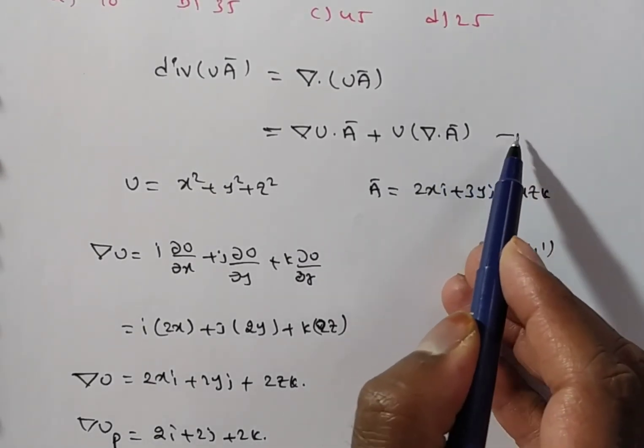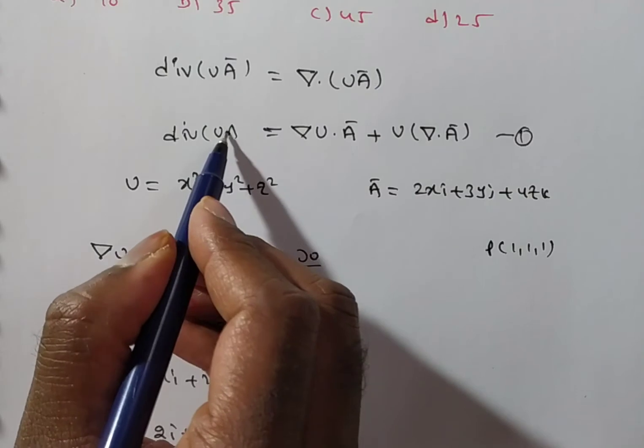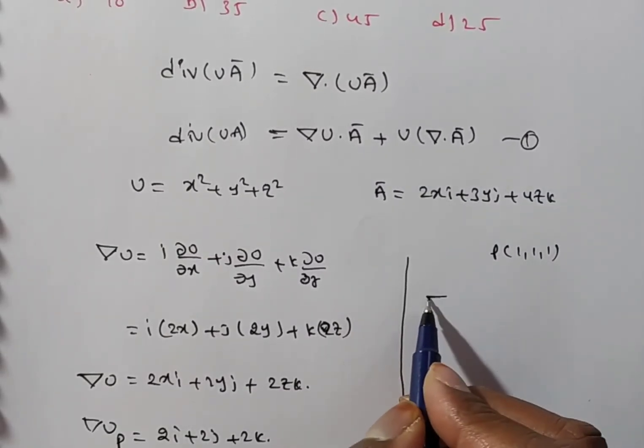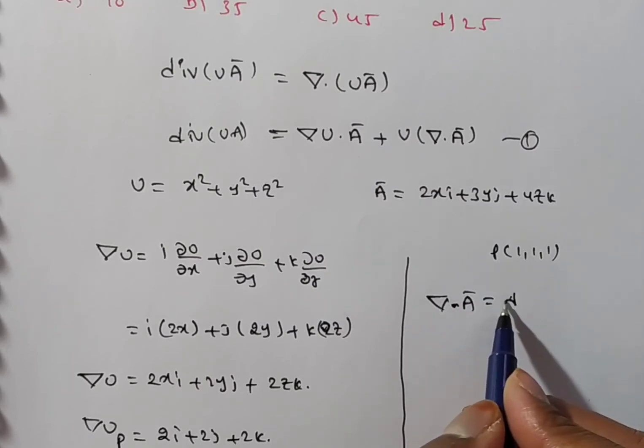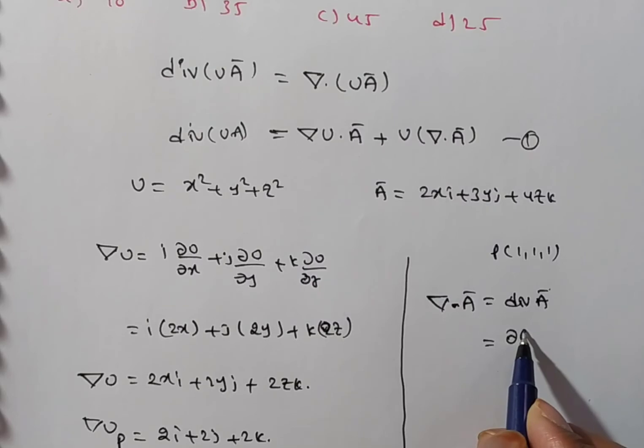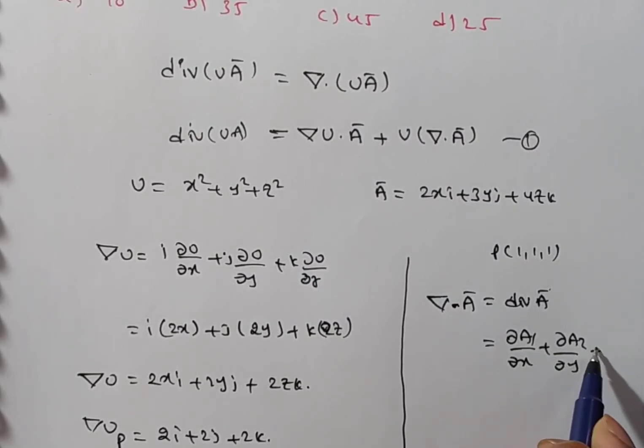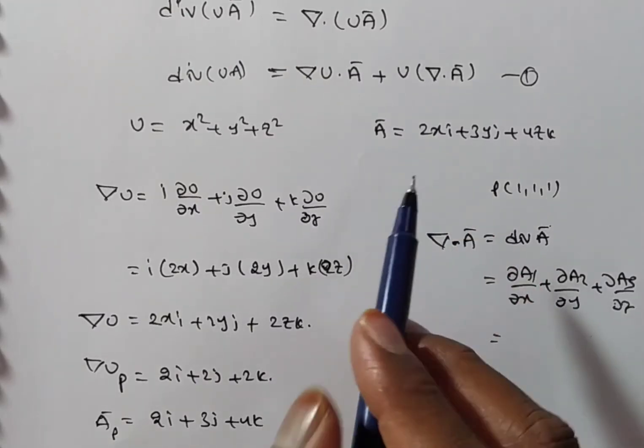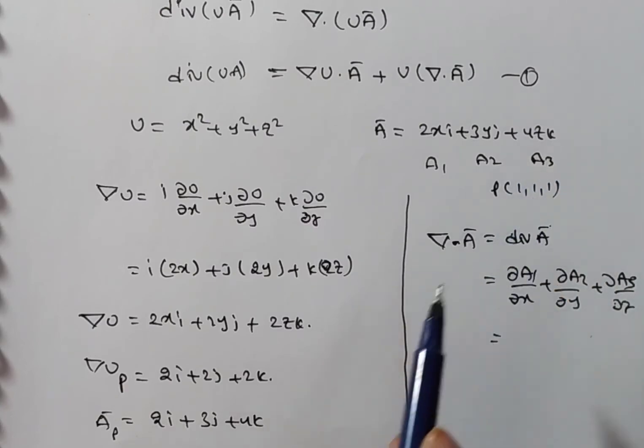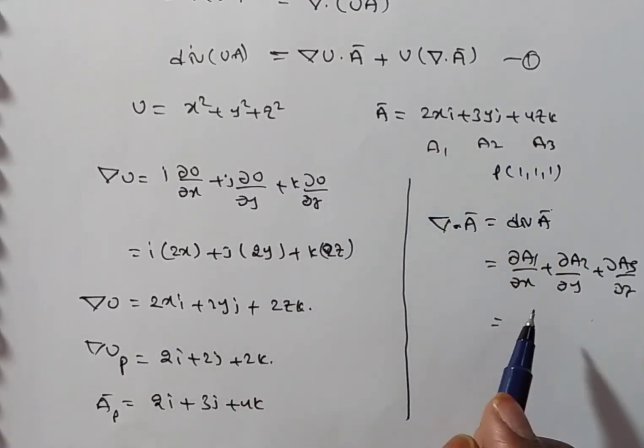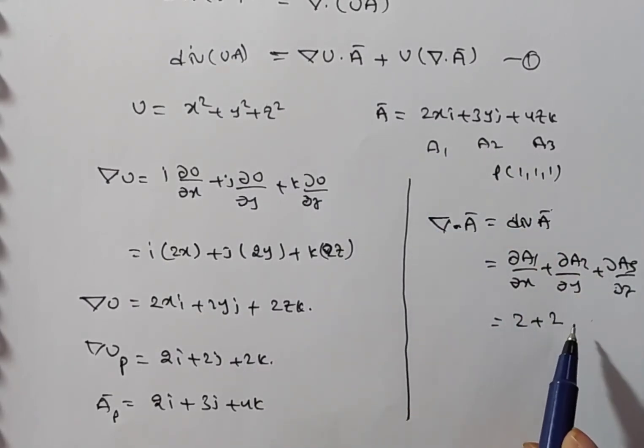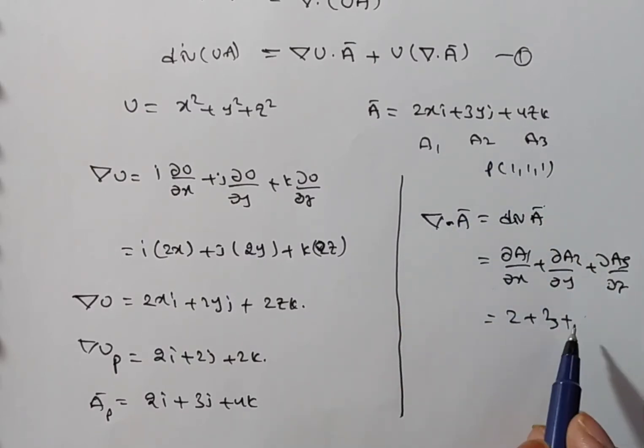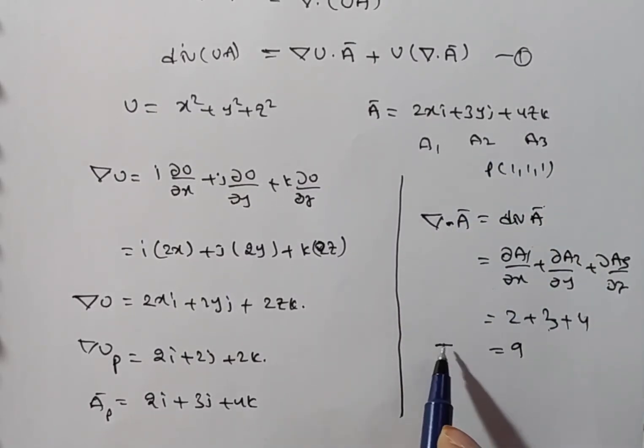So, if you consider this as equation number 1. In the equation 1, we are done first part. Now, coming to the second part. In the second part, what I have? Del dot a bar. Del dot a bar is nothing but divergence of a bar. That is, you have del a1 by del x plus del a2 by del y plus del a3 by del z. What is a1? In the a bar, you can say a1i plus a2j plus a3k. Now, differentiate i coefficient with respect to x. Then, you will have 2. Differentiate j coefficient with respect to y. Here, you have 3y derivative is 3. Next, differentiate k coefficient a3 with respect to z. Then, you will have 4. So, 2 plus 3, 5 plus 4, 9. So, del dot a bar value is 9.